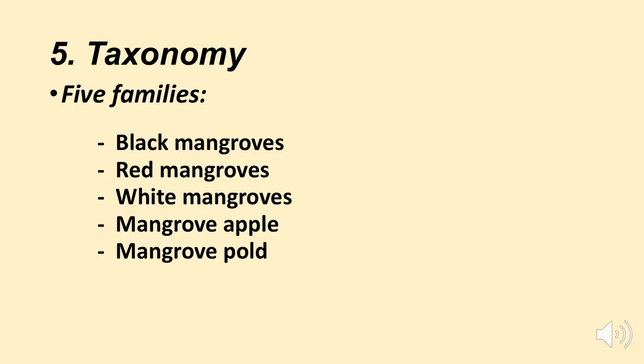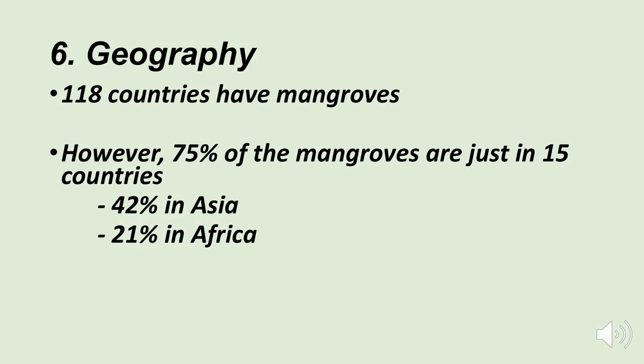Humans usually identify mangroves by color, though it's not always obvious. We have five families of mangroves: black mangroves, red mangroves, white mangroves, and mangrove apples — and when you go into a black or red mangrove forest, it's not obvious what's black and what's red unless you're a taxonomist. In terms of geography, about 118 countries have reported that they have mangroves, but mangroves are concentrated in just a few countries — 75 percent of the mangroves we have today are found in just 15 countries.